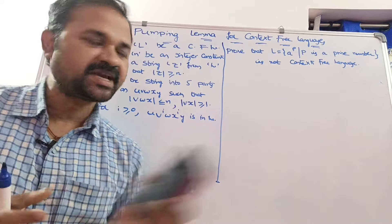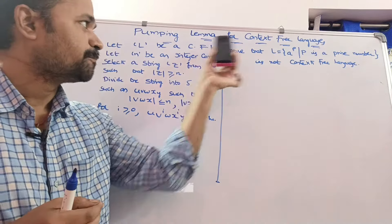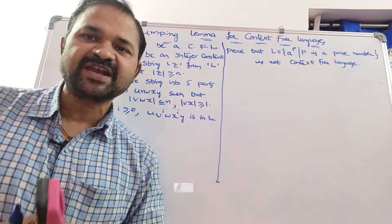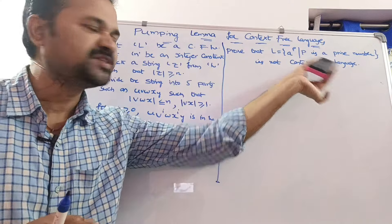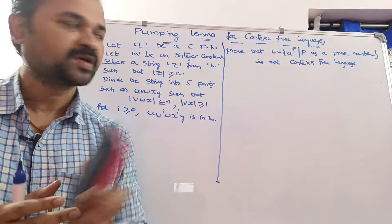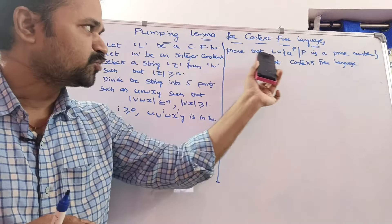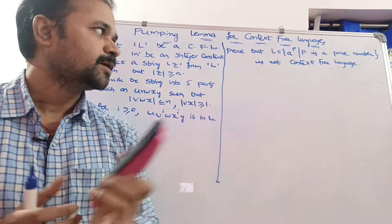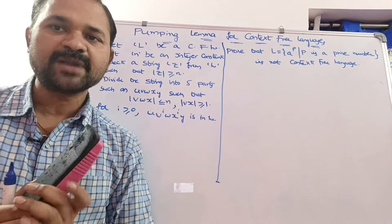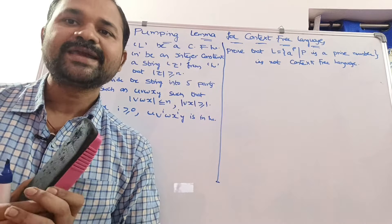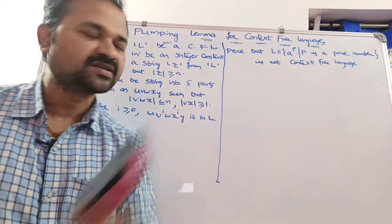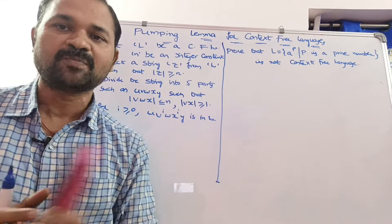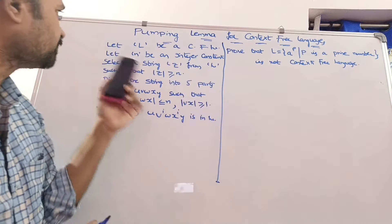Let us discuss the pumping lemma for context-free languages with the help of this example. We need to prove that L = {a^p | p is a prime number} is not a context-free language. Before solving this problem, let us first see the theory.